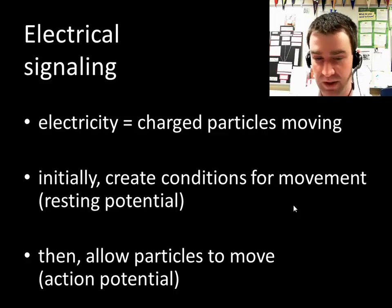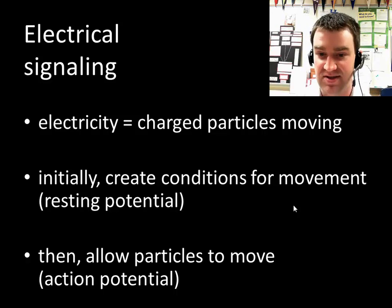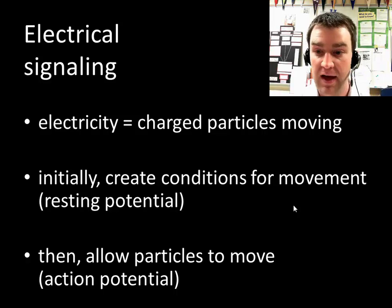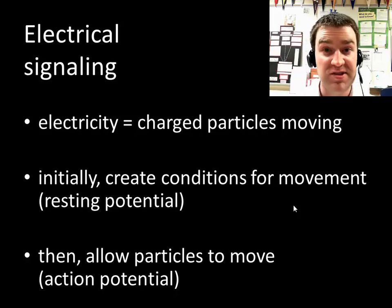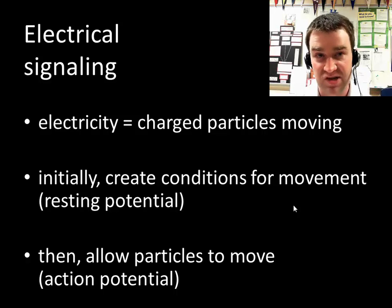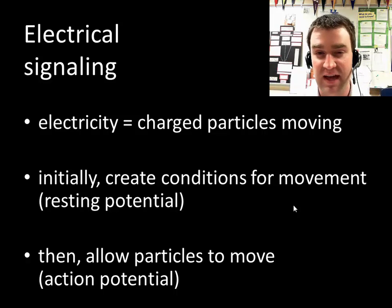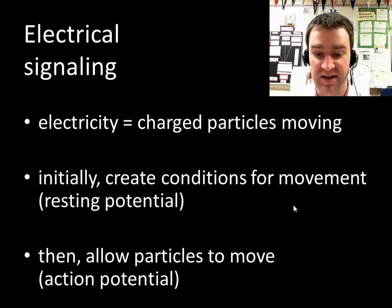So let's get to electrical signaling. What is electricity? As we saw in respiration and photosynthesis, electricity is nothing more than the movement of particles with charge. Back then it happened to be H+ flowing through ATP synthase. We're going to see that Na+ sodium and K+ potassium are both involved here in neurons, but the principle is the same. In order to fire an electrical signal you've got to create the conditions for them to move — we call that resting potential. And then what actually happens when the neuron is triggered to fire that signal is called an action potential.